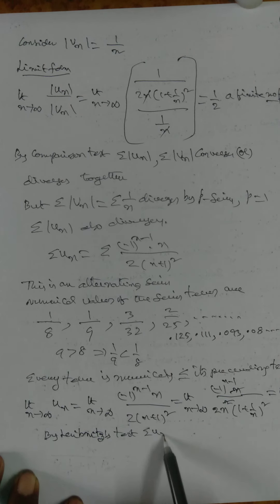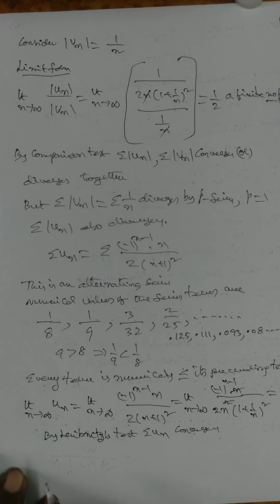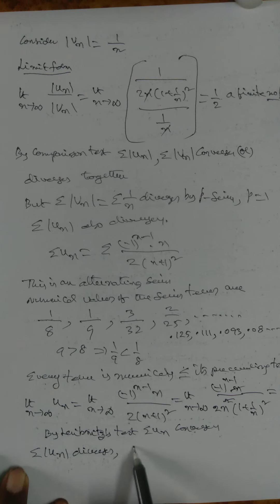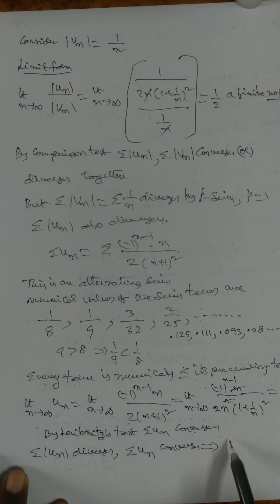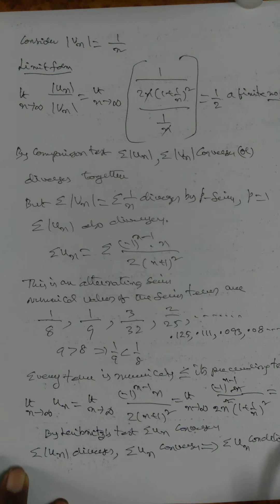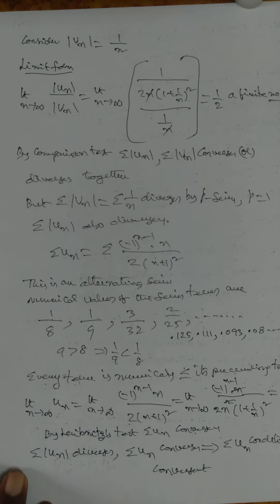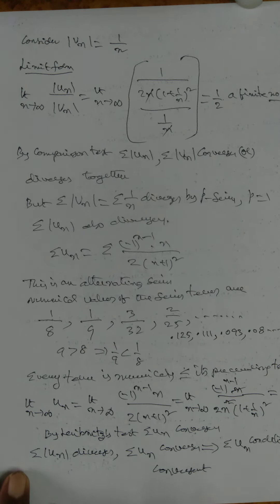By Leibniz test, ΣUₙ converges. So: Σ|Uₙ| diverges but ΣUₙ converges. This implies, by definition of conditional convergence, the given series ΣUₙ is Conditionally Convergent — since Σ|Uₙ| diverges but ΣUₙ converges.